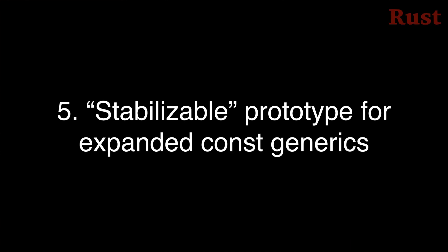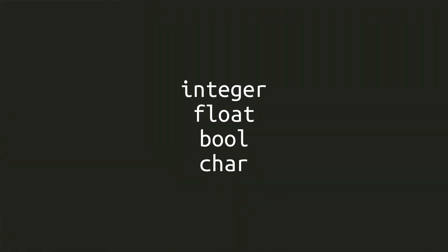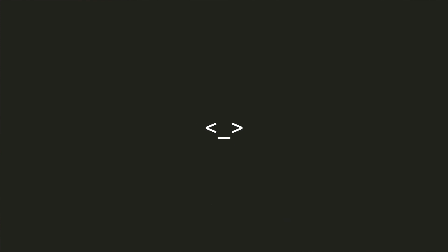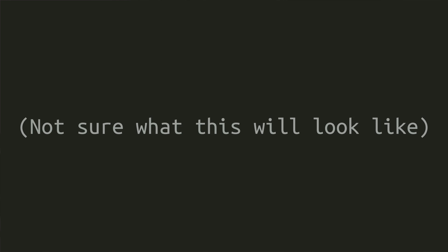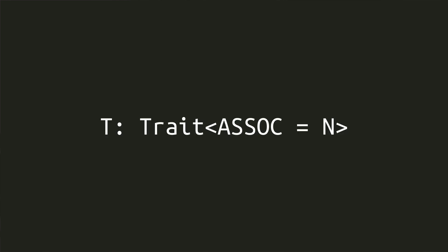Project 5 is to prototype lifting most of the current limitations of const generics, so that instead of only being able to use integer, float, bool, and char types as arguments, you can use any type — including generic types — or even specify underscore and let the compiler infer the type. This project should also allow associated const items to use generics and introduces associated const equality bounds to bring feature parity with associated types.